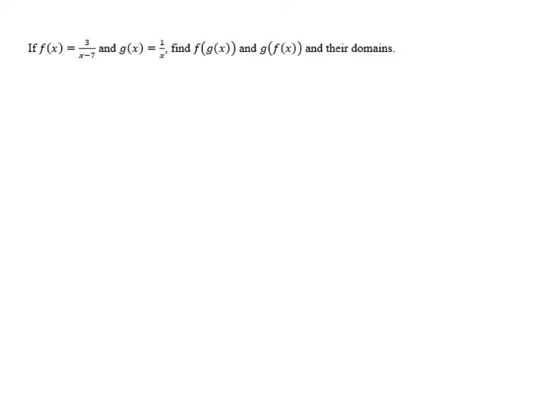If f of x equals 3 over x minus 7 and g of x equals 1 over x, find f of g of x and g of f of x and their domains.